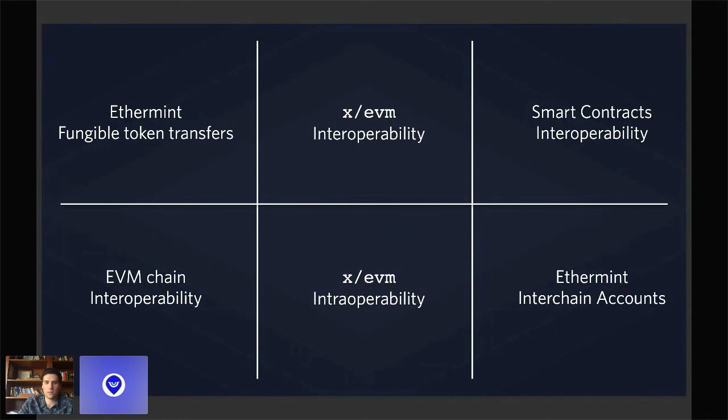Have you considered submitting a PR to Geth to support Tendermint instead of their existing proof-of-stake algorithms, as a way to start conversations between teams? No. We'll probably need to create an issue and start talking with the core teams. We've been pretty much head down on implementing the Stargate release to support IBC for this exact reason.